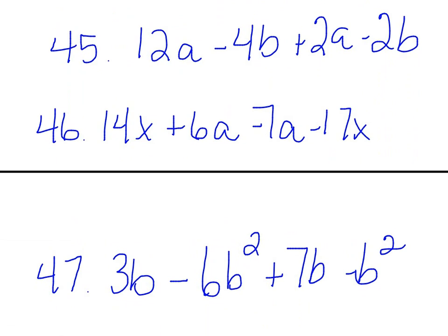Looking at 45, the one that is like the 12a is the 2a, and remember the sign goes in front with it, so 12a plus 2a is 14a, and then negative 4b minus 2b, and again remember the sign in front, so negative 4 minus 2 is negative 6b.